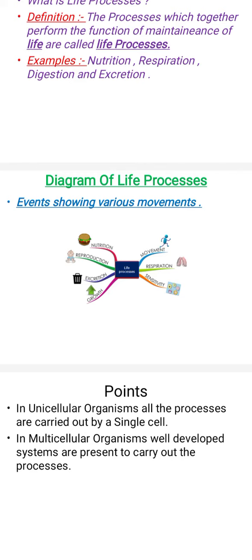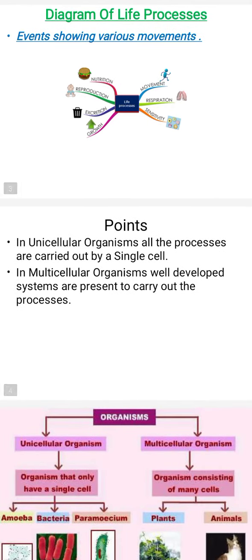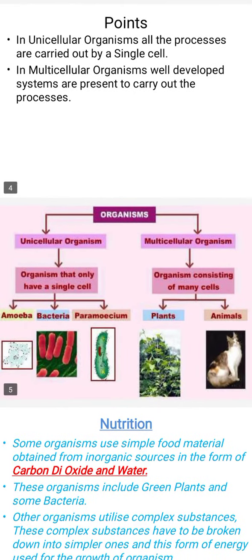In unicellular organisms, all the processes are carried out by a single cell. In multicellular organisms, well-developed systems are present to carry out the processes. There are two divisions: unicellular and multicellular organisms. In unicellular organisms, only a single cell is present; in multicellular organisms, many cells are present. Examples of unicellular organisms: amoeba, bacteria, and paramecium. Examples of multicellular organisms: plants and animals.